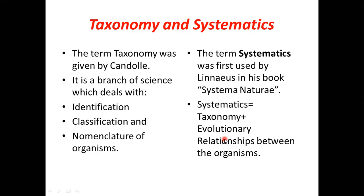This branch is known as systematics. In taxonomy, it was only about identification, classification, and nomenclature. In systematics, along with identification, classification, and nomenclature, we also study the evolutionary relationship — which organism is related to which other organism.